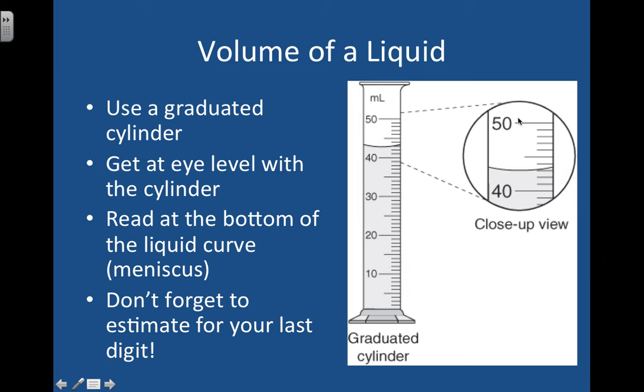Then you're going to read the bottom of the liquid curve. That curve is called the meniscus. And when you look at the bottom, that's where you're going to find your reading. Don't forget to estimate for your last digit. So let's practice here. Take a look at this zoom in of this graduated cylinder. I want you to figure out what the volume of the liquid is.